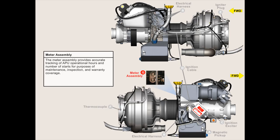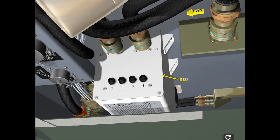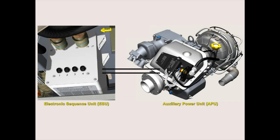The ESU uses the thermocouple output signal for over temperature protection, shutting down the APU if EGT exceeds safe limits. The meter assembly provides accurate tracking of APU operational hours and number of starts for purposes of maintenance, inspection, and warranty coverage. The ESU, the electronic sequence unit located in the cabin overhead, is the control element for the APU. It contains a microprocessor and conditioning circuits, and monitors speed and temperature, outputting signals to control APU functions. Four built-in test indicators on the ESU provide fault detection information for troubleshooting.